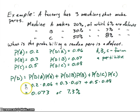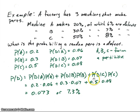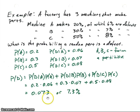Now suppose we want to find the probability that a part is defective. Based on total probability, it's the sum: probability of D given A times probability of A, plus probability of D given B times probability of B, plus probability of D given C times probability of C. We plug those values in, sum them all up, and we end up with 0.073, or 7.3%, that a random part will be defective.